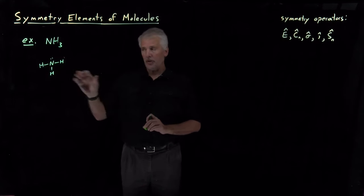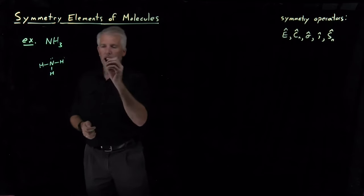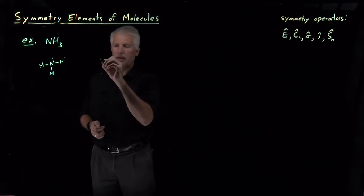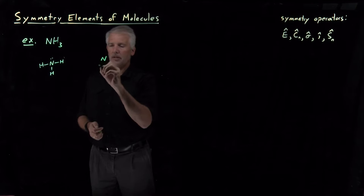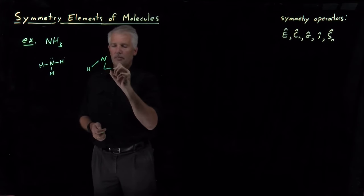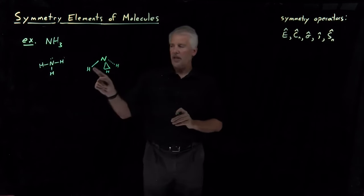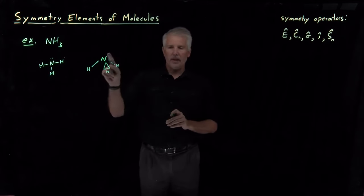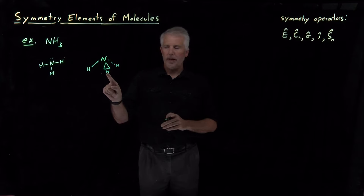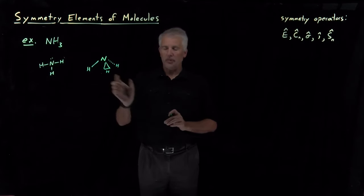You have to remember your VSEPR theory and be able to draw these molecules the way you've done since general chemistry. For ammonia, that's a pyramidal molecule. I'll draw that with one hydrogen in the plane of the board, one coming out of the board towards you, and one with a dashed line going back into the board away from you. So it's a trigonal pyramidal molecule.